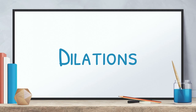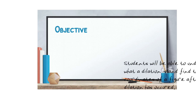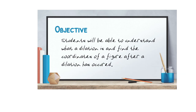Hello everyone and welcome to virtual math class. Today we will be talking about dilations. Our objective for the day is students will be able to understand what a dilation is and find the coordinates of a figure after a dilation has occurred. The word dilation comes from the word dilate — what do you think dilation means in terms of the transformations we've been talking about?